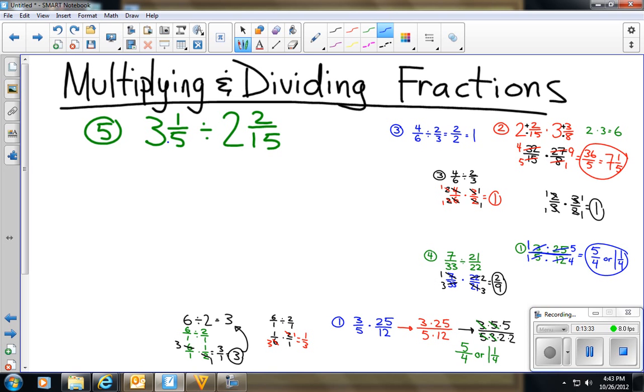So I'm going to do 3 times 5 is 15 plus 1 is 16. So I have 16/5 divided by, and I'm going to do 15 times 2 is 30 plus 2 is 32. So I have 32/15. Now I'm going to flip the second number. I'm going to multiply by the reciprocal, so I'm going to do 15/32 times 16/5.